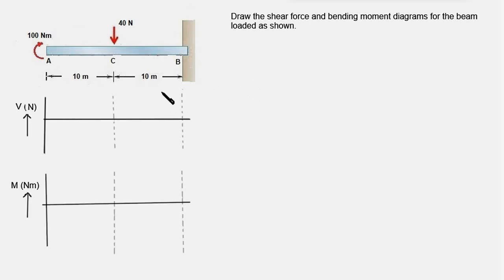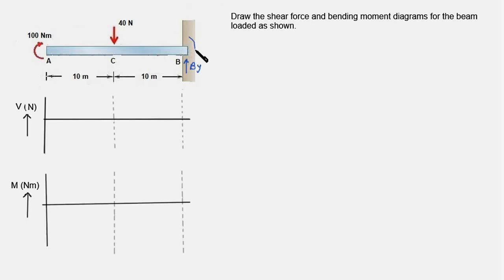In the first problem, we have a cantilever beam subjected to a couple of moment 100 Nm at the free end and a point load of 40 N at the center point of the beam. The first step is to determine the reaction forces at the fixed end: reaction force BY and a moment MB.